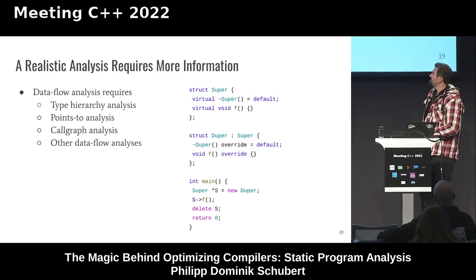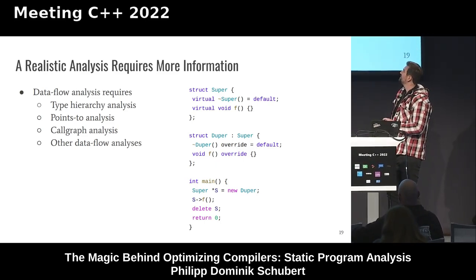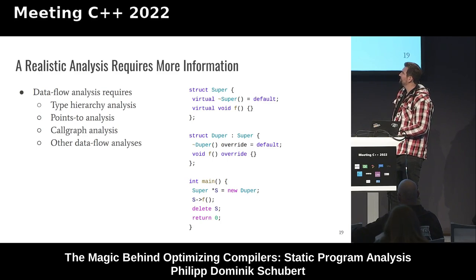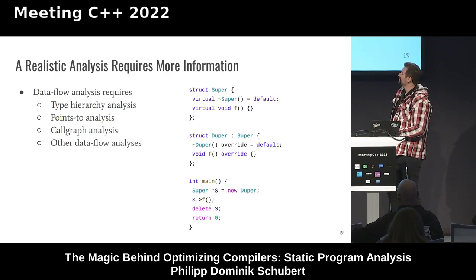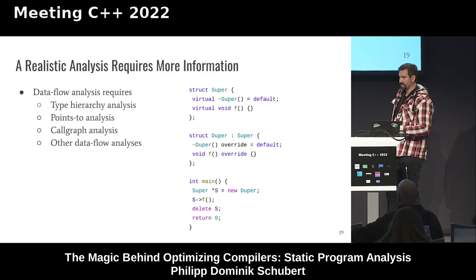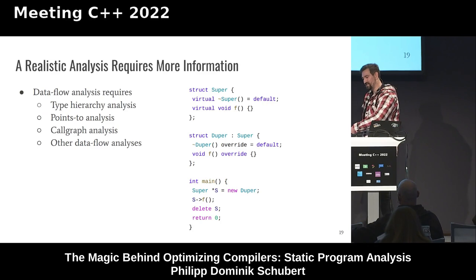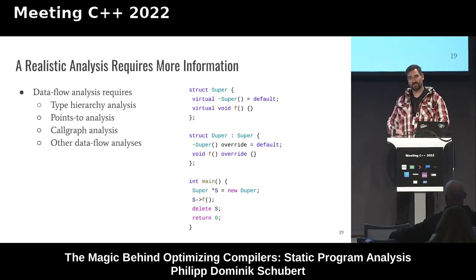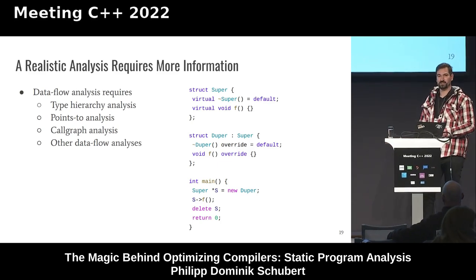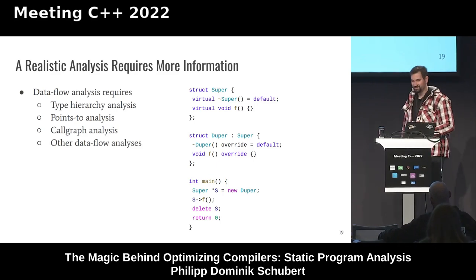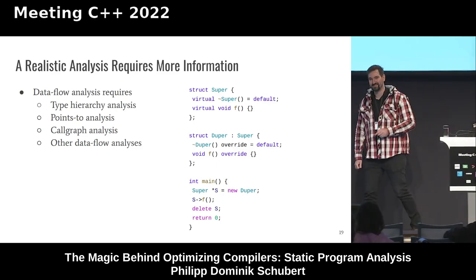A realistic analysis requires much more information — especially for bug finding or vulnerability detection. You need information on type hierarchies, pointer relationships, call graph information, and depending on complexity, even results of other data flow analyses. To resolve a virtual function call to F where there are multiple implementations, you first need points-to information to find that a pointer S is actually pointing to an allocated type Duper, then Vtable information to confirm which implementation of F is being called.